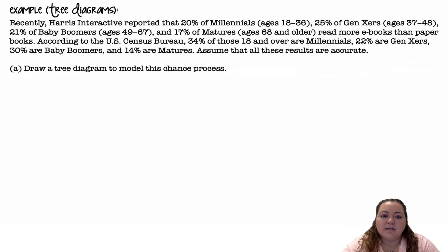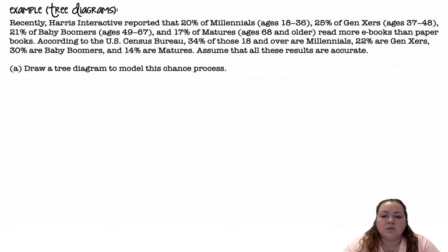Tree diagrams. Recently, Harris Interactive reported that 20% of Millennials (age 18 to 36), 25% of Gen Xers (age 37 to 48), 21% of Baby Boomers (age 49 to 67), and 17% of Matures (age 68 and older) read more e-books than paper books. According to the U.S. Census Bureau, 34% of those 18 and over are Millennial, 22% are Gen Xers, 30% are Baby Boomers, and 14% are Matures. Assume that all of the results are accurate. Draw a tree diagram to model this chance process.